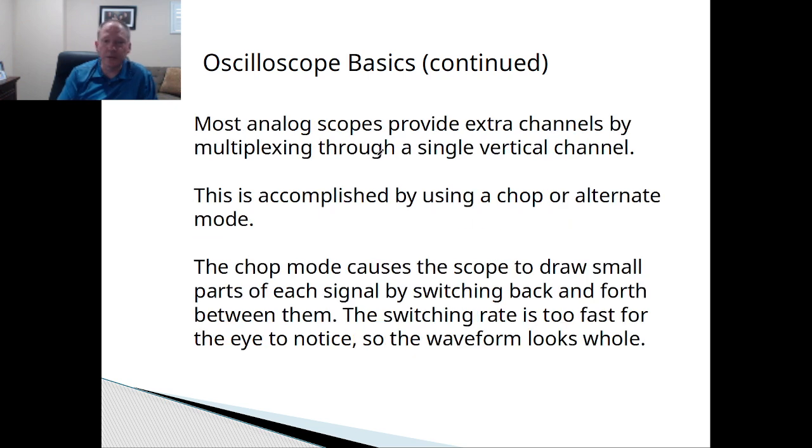And then most scopes, all the ones that we're going to work with, have two channels. So you can have your input and your output, or you can have the scope on VR one and then down the line, you could have it on the capacitor or on the resistor or the inductor or whatever we're doing there. And then you can have two channels and then you can separate them on your scope, or you can have them overlapping. So you can measure the input output difference and determine the gain or the loss or whatever it is.